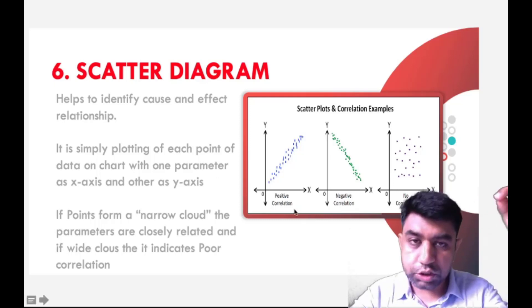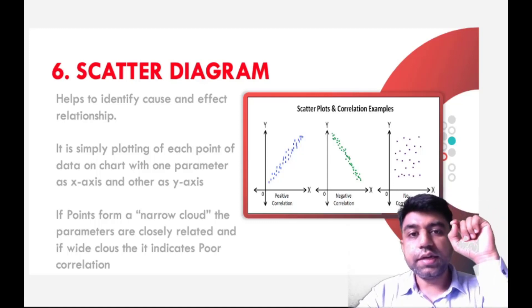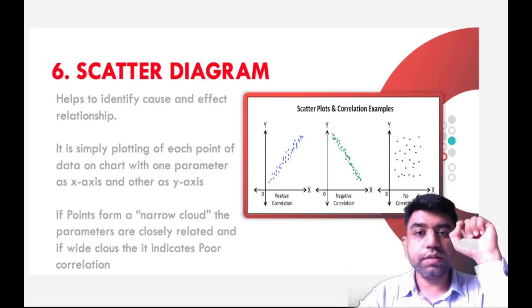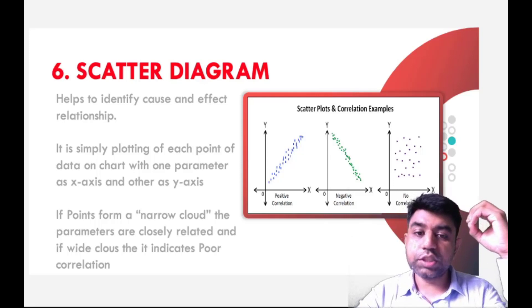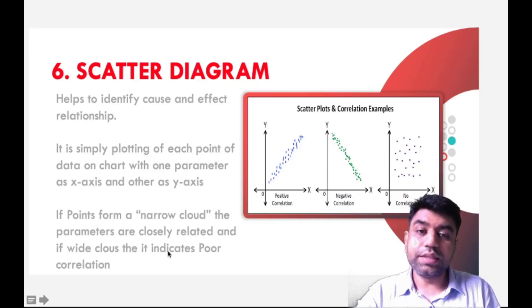If two activities we need to measure, say for example, defect versus time, then at each and every point of time, say at each and every five minutes, we want to check the number of defects. That will be represented by a single dot. We need to check how the cluster of dots is formed. If there is a narrow cloud, then the parameters are closely related. But if it forms a wide cloud, then there is no proper relationship between the two different quantities which you are plotting.